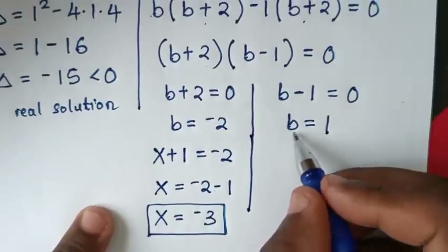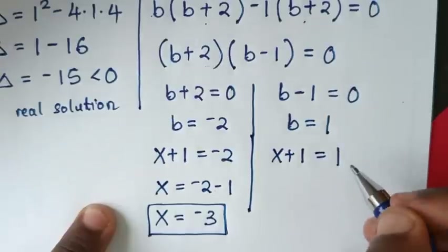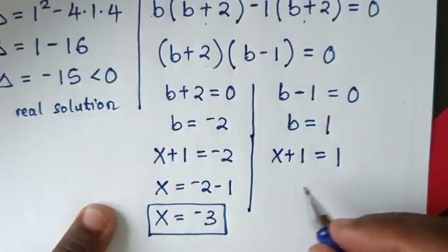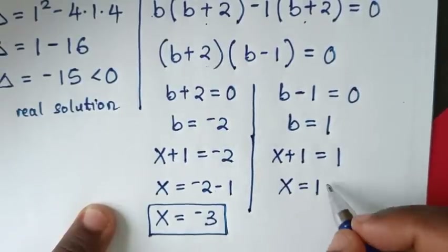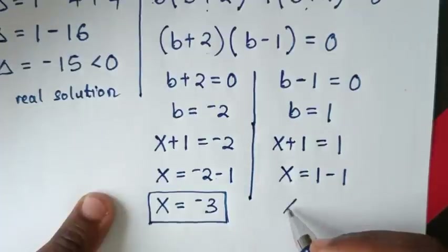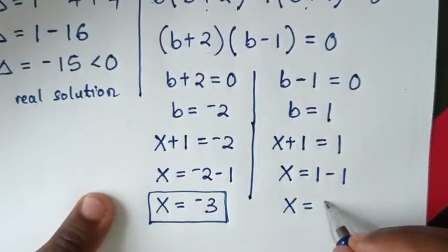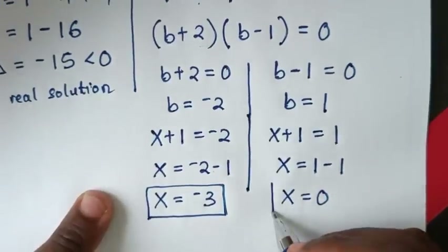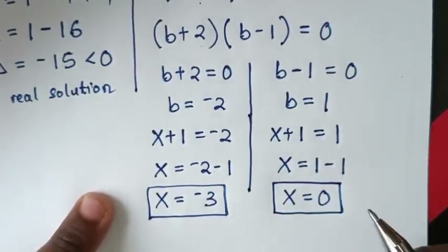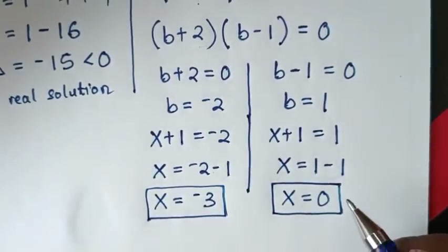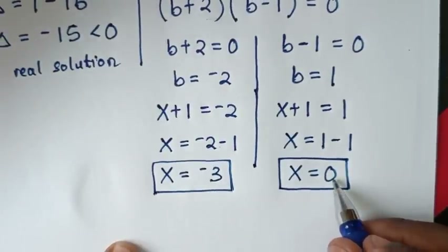And also, b = x+1 = 1, so we take 1 to this side: x = 1 - 1 = 0. So this is the second value of x. We have two solutions: x = -3 and x = 0.